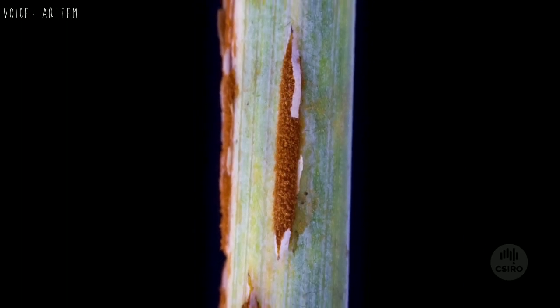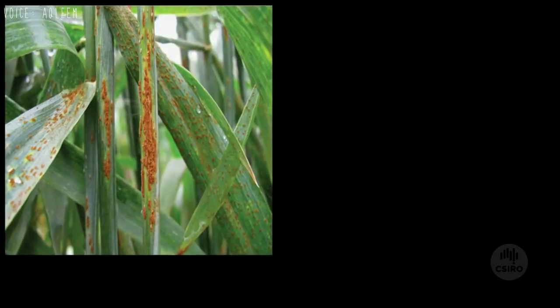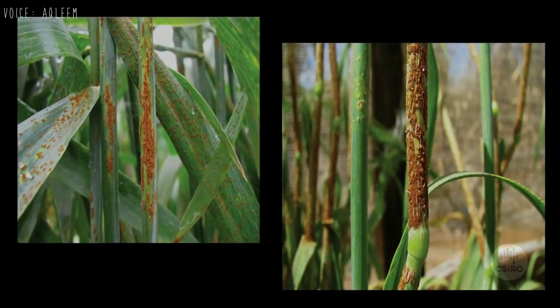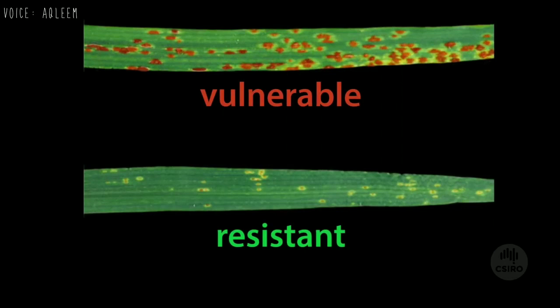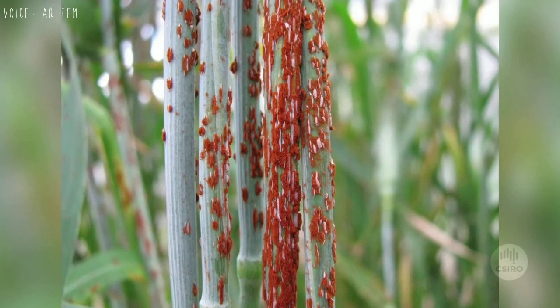New strains of fungi are constantly developing through evolution. This can make some plants vulnerable to infection. Diseases like rust fungus have plagued crop production since people began crop farming.